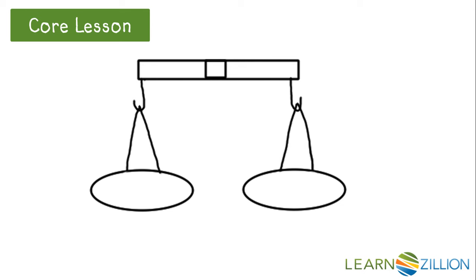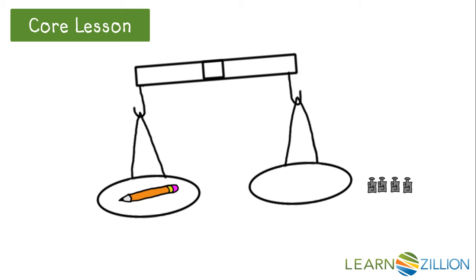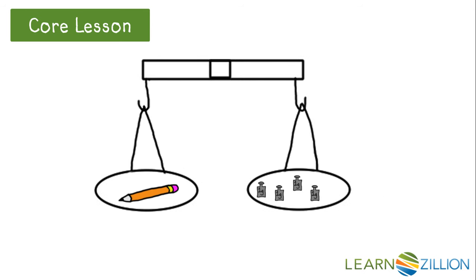So here we have a balance scale, and we're going to be using it to measure the mass of this pencil. The first thing we do is place the pencil on one side of the scale. This will make the scale tilt down a little. Our objective is to make sure the balance scale is even on both sides. To do that, we have to add known masses to the other side until it evens out. Now both sides of the scale are completely equal. One gram plus one gram plus one gram plus one gram gives us four grams. So the mass of this pencil is four grams.